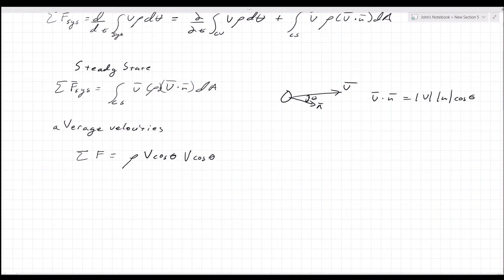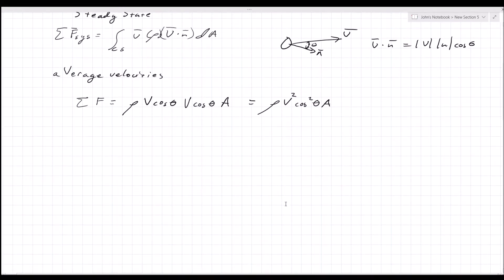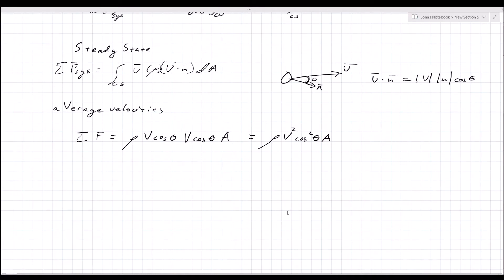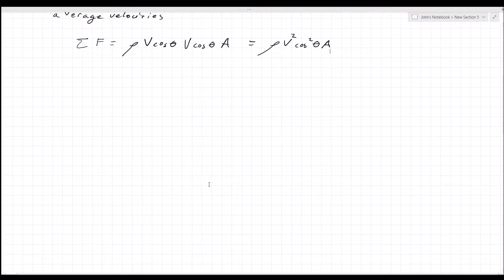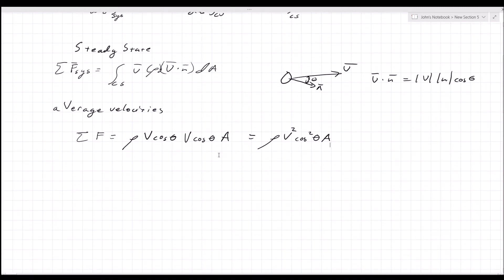And dA — assuming we know this area A — gives rho v squared cosine squared theta times the area of your control surface. With average velocities, velocity is constant with respect to area and density does not change with respect to area, so everything comes out algebraically.